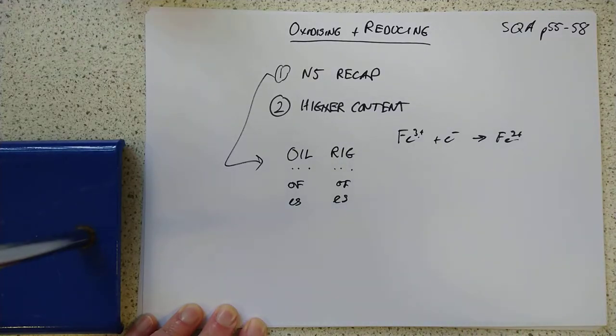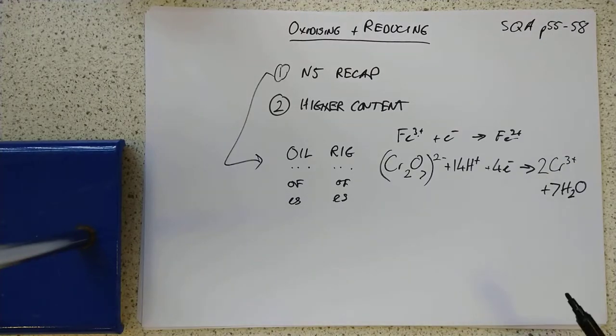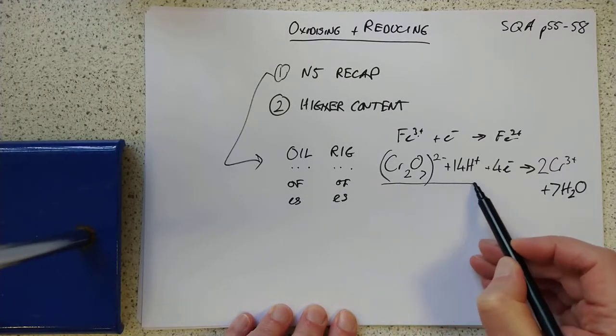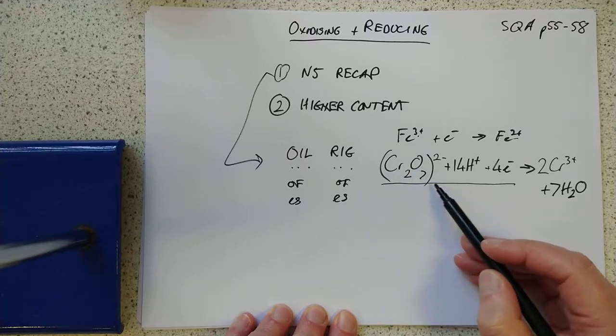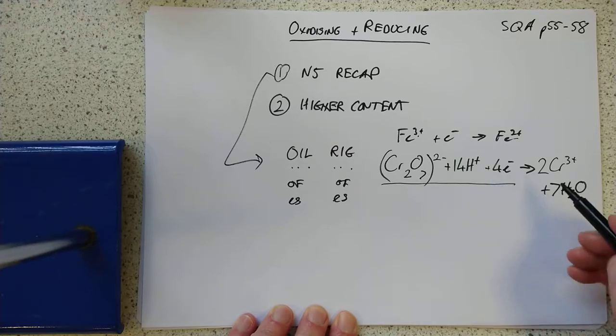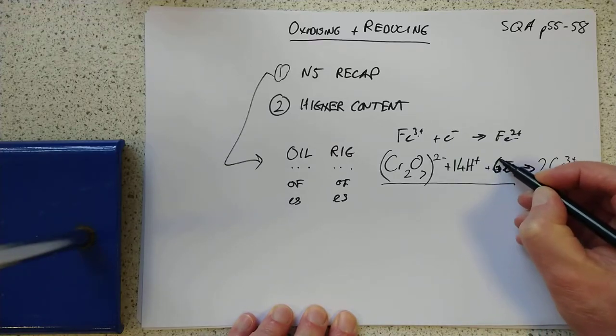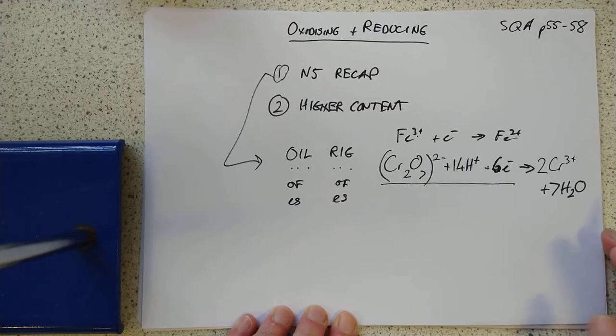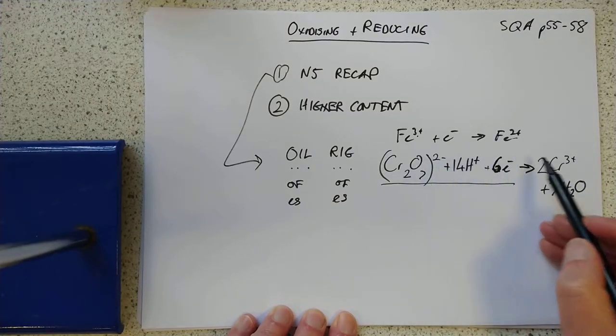At National 5 you could get away with a simple version. For example, if you had Fe³⁺ plus an electron going to Fe²⁺, that's fine and dandy. You can see that the charge here is being reduced. But you can't apply that to the more complex ones at Higher. Have a look at this one. We've got Cr₂O₇²⁻ plus 14 hydrogen ions plus 6 electrons.